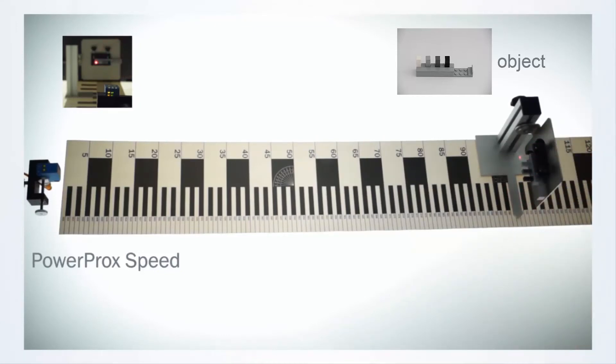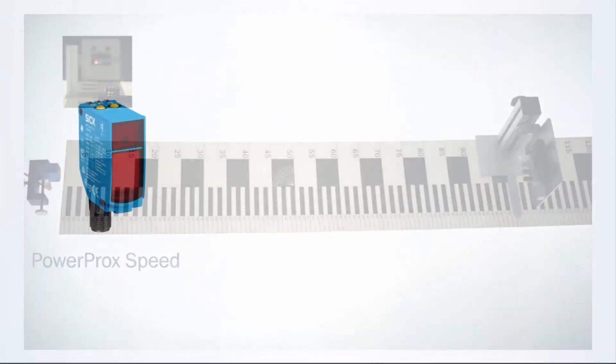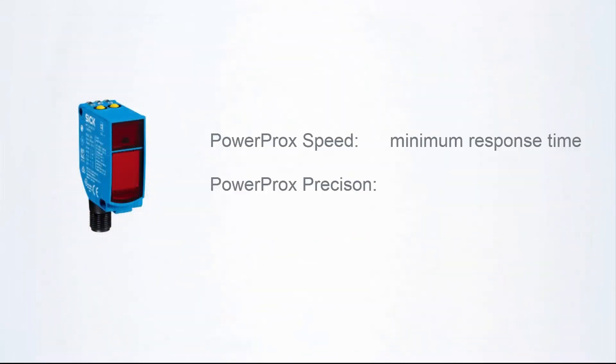Objects that are even smaller in height cannot be detected at this sensing range. This is when precision versions show their strength. They are designed to detect even smaller objects, which means they are a little bit slower in their response time but optimized for a precise depth resolution.